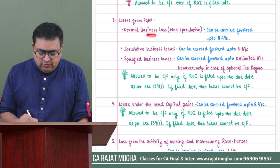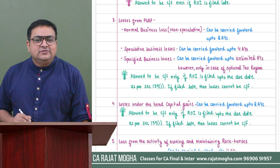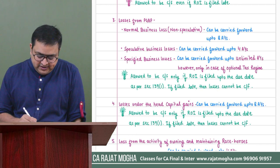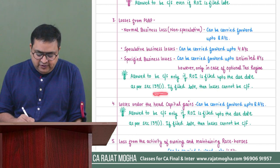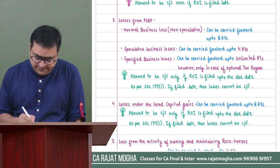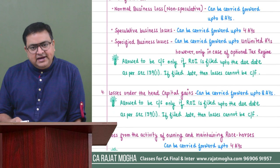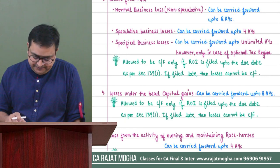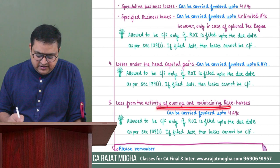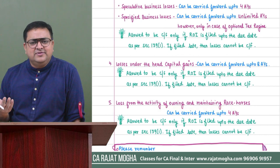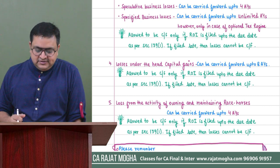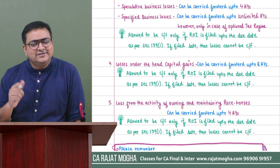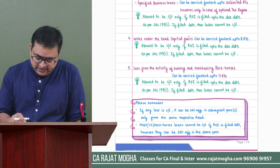To summarize for PGBP: normal business loss — 8 years; speculative business loss — 4 years; specified business loss — unlimited period. Return must be filed on time under section 139(1). For capital gain losses: they can be carried forward to subsequent years for a maximum of eight years. Return must be filed on time. Losses from owning and maintaining horse race resources — similar to speculative business — can be carried forward for 4 years, and return must be filed on time.